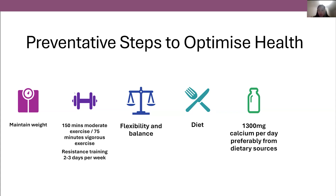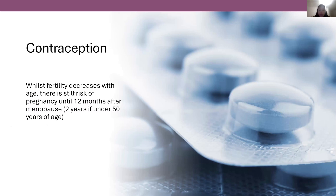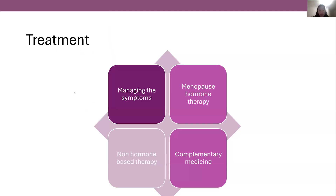Vitamin D is also an important part of bone health, which we get from healthy sun exposure, and if that's not enough, supplementation is also required. A special mention to contraception: we often associate menopause with the loss of fertility, but there is still a risk of pregnancy until you reach 12 months after menopause, or two years if your menopause has occurred under 50 years of age. Don't forget your contraception needs — recommended options may change at this time, so speak to your health professional.